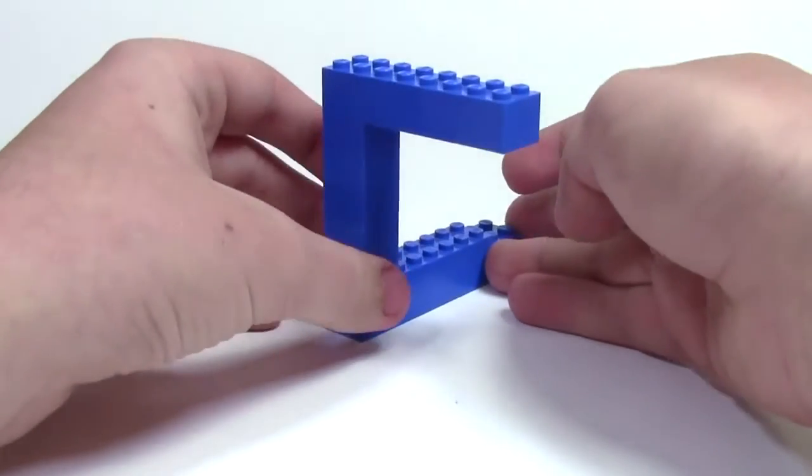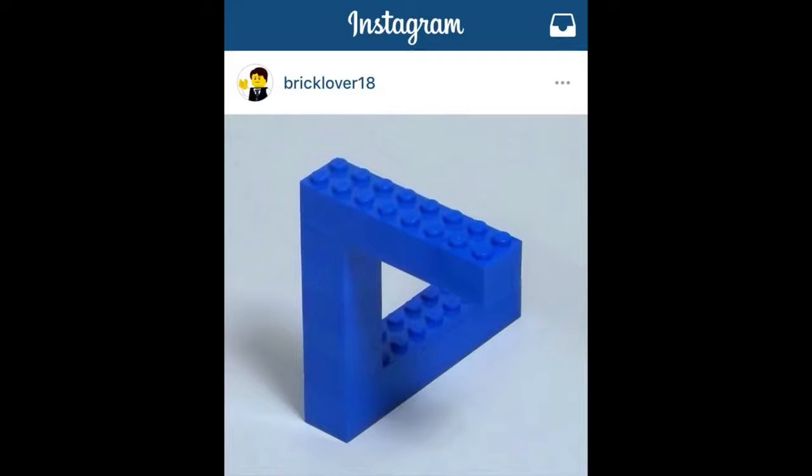Now, when you position this in the right angle, you'll see the optical illusion. Now that you know how to build the triangle, and you realize it's not that hard, it's time to create your photography setup, so you can capture the best picture, and make this look as real as possible.